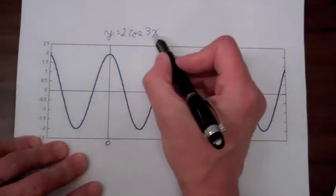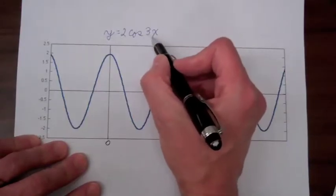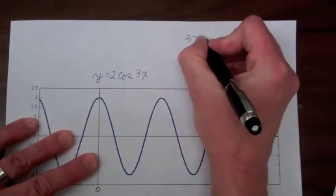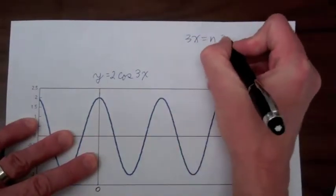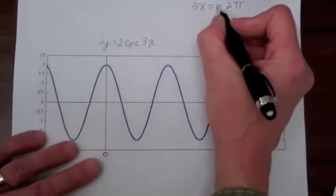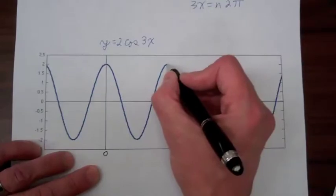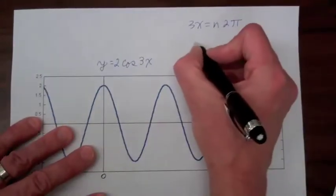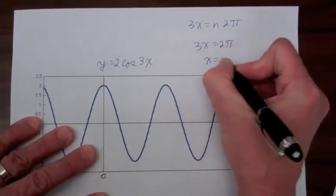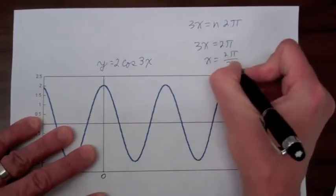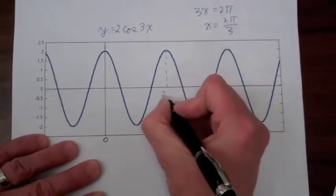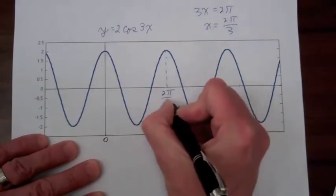The cosine is going to be 1 whenever the argument of the cosine, in this case 3x, is equal to an integer multiple of 2π radians. So when n is equal to 1, we're going to be on this peak right here. In that case, 3x is equal to 2π, or x is equal to 2π/3. So this peak occurs at an x value of 2π/3.